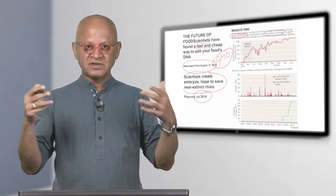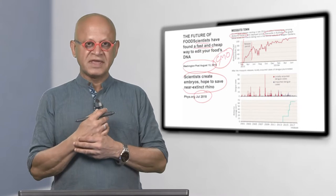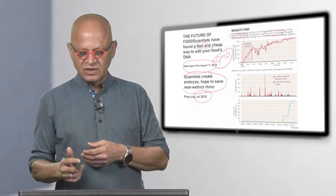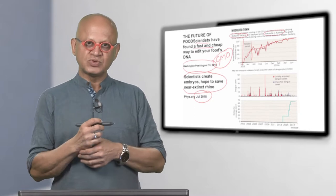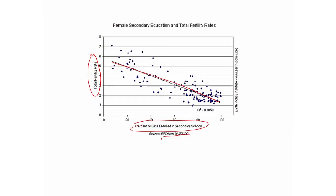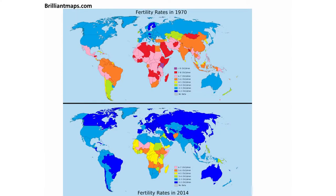When you say contraceptives, there are all kinds of debate from the religious side and so on. But nonetheless, considering the population issue, you have to worry about this, and it has proven very useful to look at fertility rates. For example, in the 1970s — the blue colors are in the range of 1 to 2 children — a woman having 2 children is considered the replacement rate, because a couple having 2 kids means the population is stable.